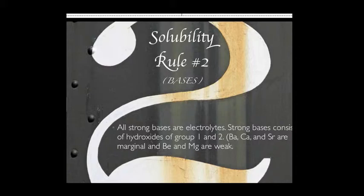Solubility rule number two is bases. All strong bases are electrolytes. Strong bases consist of hydroxides of group one and two. Ba, Ca, and Sr are marginal, and Be and Mg are weak.